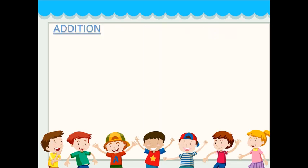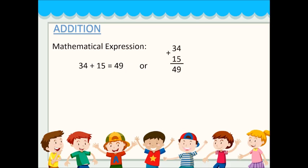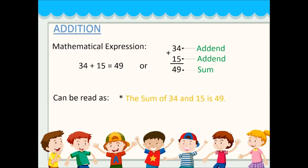So let's start with addition. The mathematical expression of addition is written as 34 plus 15 is equals to 49. Where 34 is an addend and 15 is also an addend, and 49 is the sum. This can be read as: the sum of 34 and 15 is 49, or 34 plus 15 is equals to 49, or simply 15 added to 34 is 49.